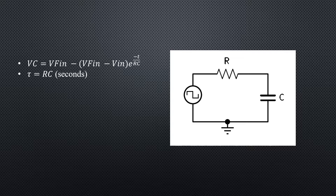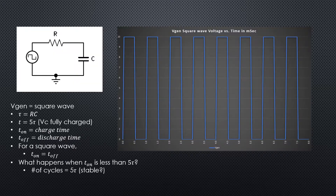Here's our simple series RC circuit. We've got a square wave now instead of our DC supply and switch from the previous video, but we're still going to use these two formulas: VC equals V-final minus (V-final minus V-initial) times e to the negative time over RC. RC is also equal to tau, and both are in seconds. For a square wave, time-on is the charge time and time-off is the discharge time. For this example, time-on equals time-off — it's a true square wave.